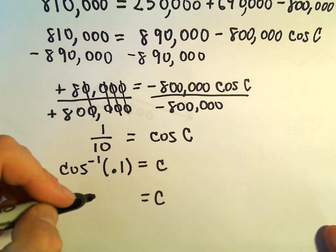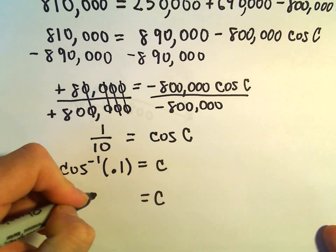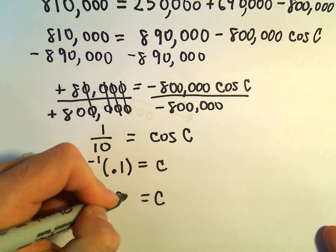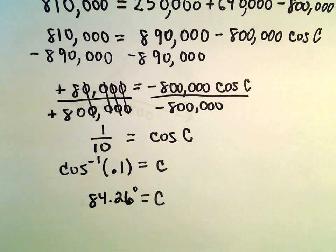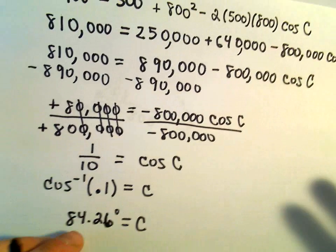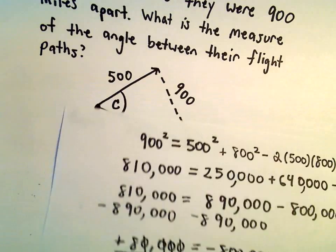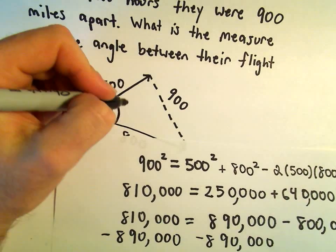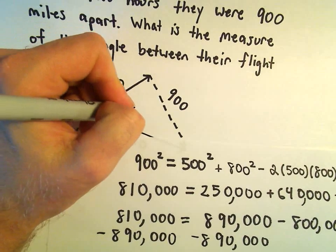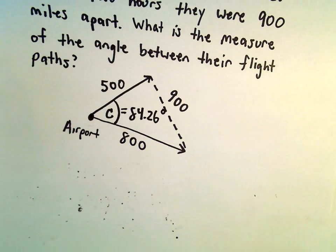I'm getting this to be roughly equal to 84.26 degrees. So they left not almost, you know, almost at right angles, not quite, but pretty close. So this angle between them is 84.26 degrees.